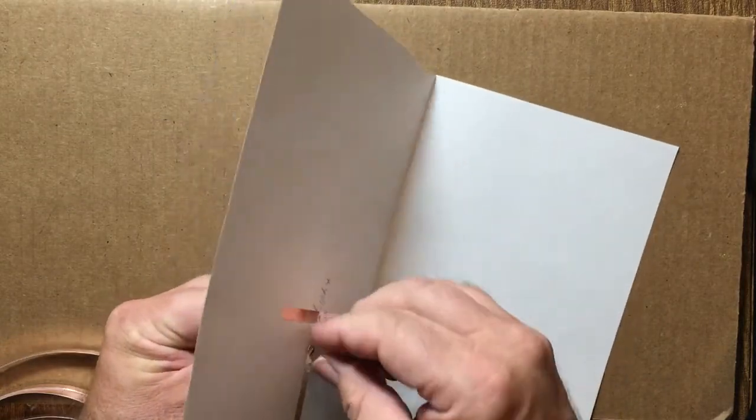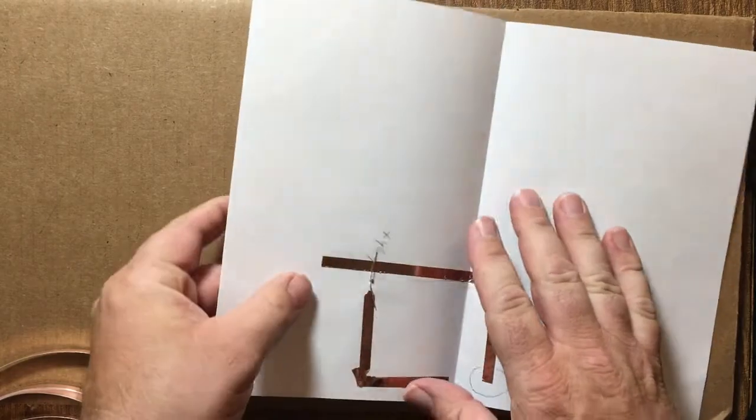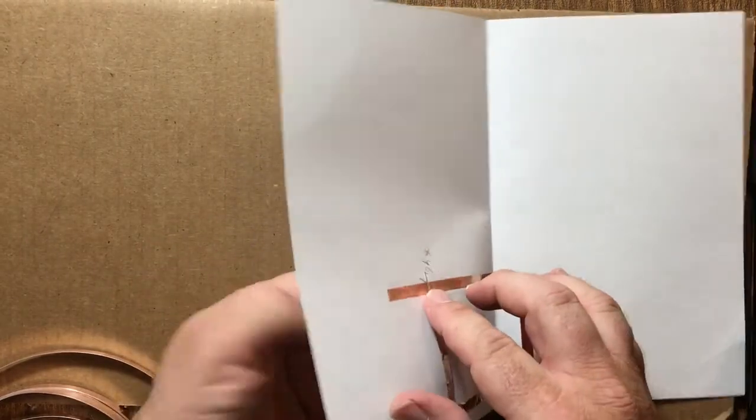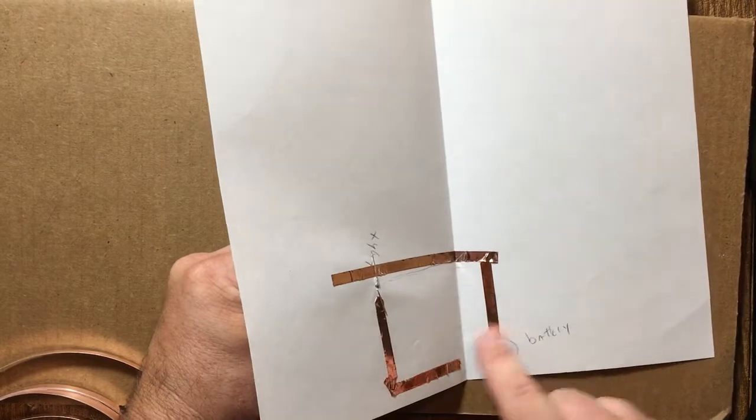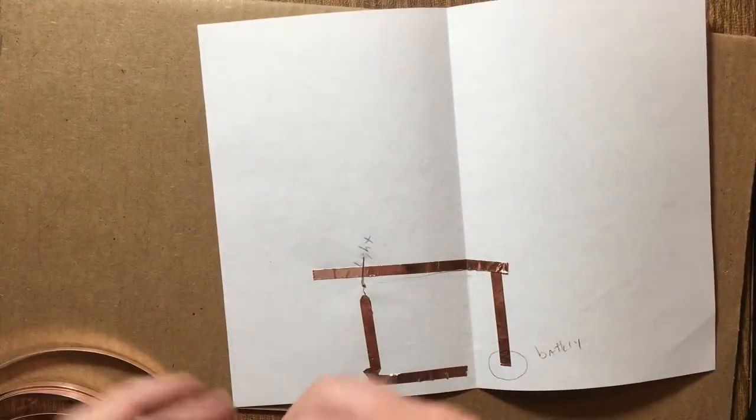This is one of the things that can go wrong - when you bend, things can break inside. Long is up here, short is down here, so I need to make sure my positive is here. Now let's tape those down.